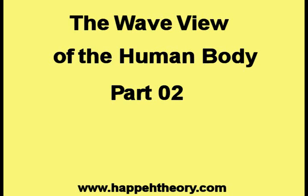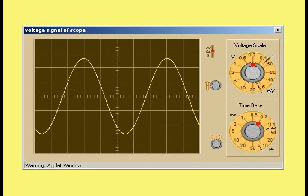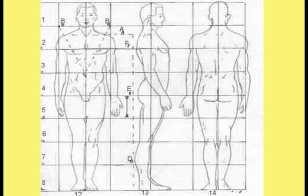This video is part two of the series on the wave view of the human body. It was stated in the first video of this series that the construction and behavior of the human body is influenced by waves. This is a picture of a wave on an instrument called an oscilloscope. This three-view picture of the human body was used to prove the statement that the human body is influenced by waves.